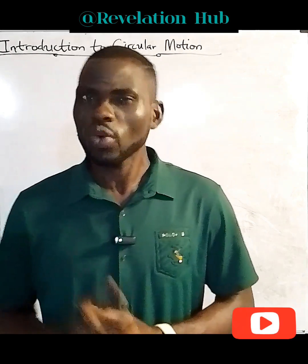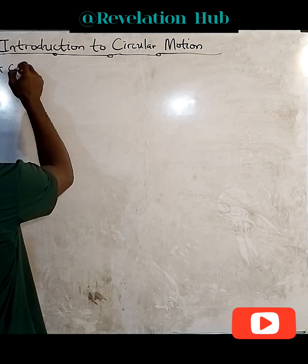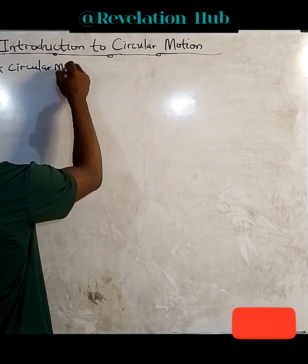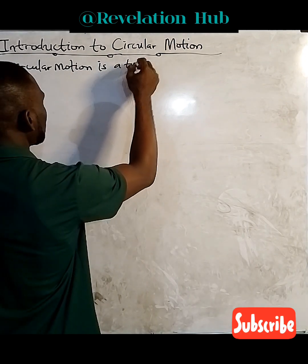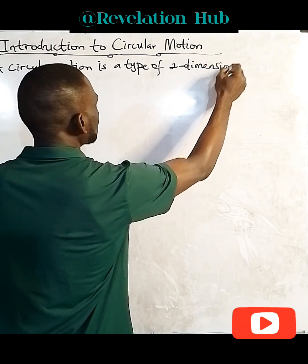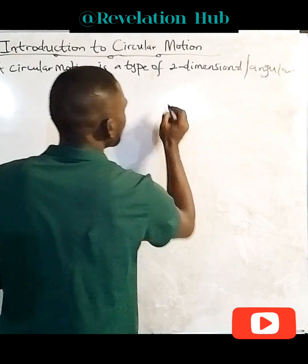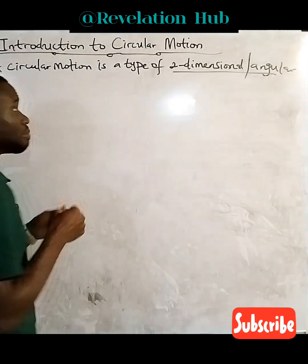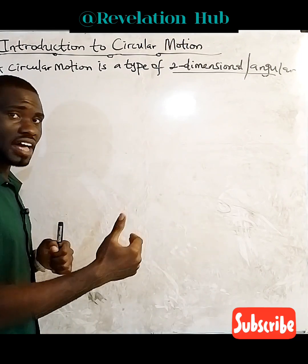Now we've perfected everything on projectile motion, and today we're going to be discussing circular motion. A circular motion is a type of two-dimensional motion — I also call it angular motion. Don't forget that. The reason why we call it two-dimensional motion is simply the fact that the body, or bodies undergoing this kind of motion, move in both the x-axis and y-axis.